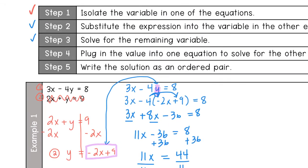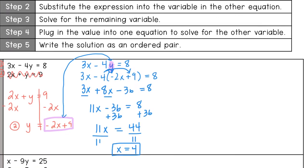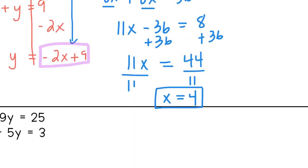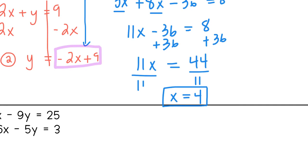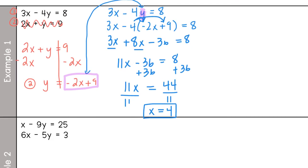That is step three — we're three-fifths of the way done but not finished yet. Since there are two equations, we need two numbers in our solution. We already have x, so now we need to solve for y. Step four: plug the value into one equation to solve for the other variable. Since x equals 4 and equation two already has y by itself, I'll use equation two.